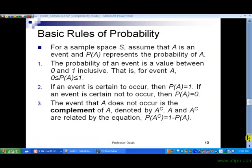So let's just sum things up here and talk about what I like to call the basic rules of probability. First, for a sample space S, assume A is an event, and P of A represents the probability of A. So I've written three fundamental rules here. First, the probability of an event is a value between 0 and 1, inclusive. In other words, for any event, the smallest the probability value can be is 0, the largest it can be is 1. If it's certain not to occur, the probability is 0. If the event is certain to occur, the probability is 1.